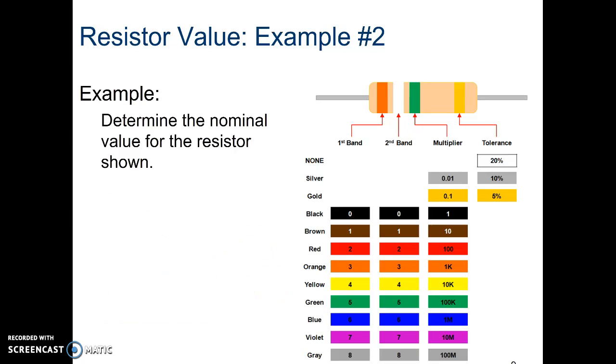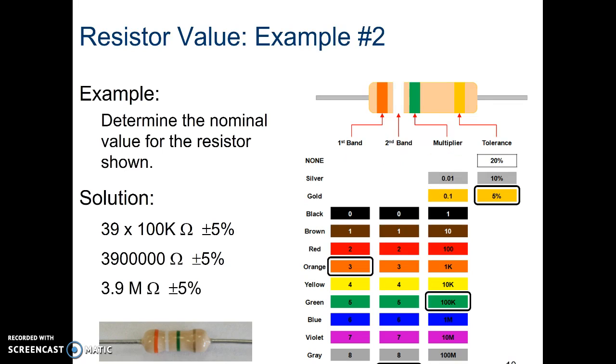That's pretty straightforward. So let's look at the second example. The first band has an orange color. So what do you think that value is going to be? The second value has a white color, and then the multiplier is going to be green, and the tolerance is going to be yellow. So determine what the nominal value or the face value is going to be for this resistor. If you look at the values, orange is 3, white is 9, the multiplier is green, and then the tolerance is going to be 5%.